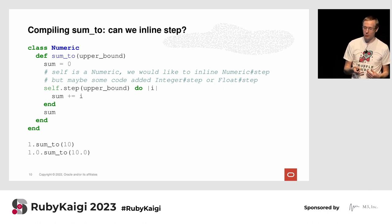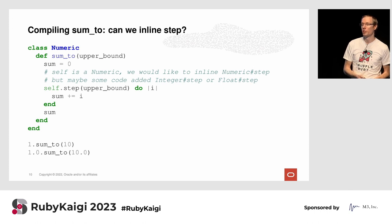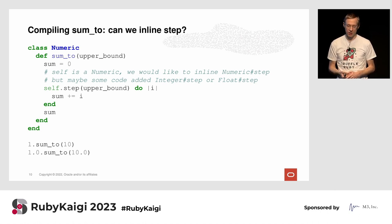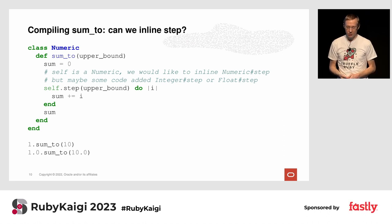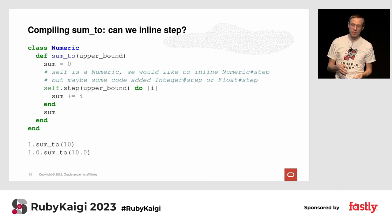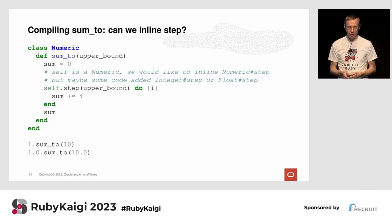When we look at this method from a compiler point of view, there's not much going on except this call to step. The crucial part is to inline step, but to inline it, we need to know which step method it is, because there's numeric#step but there might be others. From a static analysis point of view, we can't really know for sure, because somebody could define integer#step or float#step. We also have two call sites at the bottom — one with Integer and one with Float — to guide our reasoning.